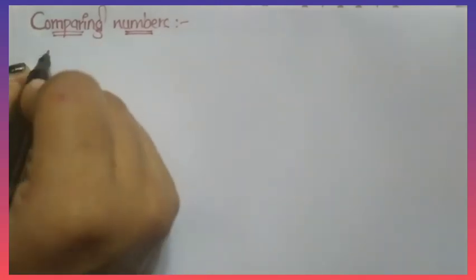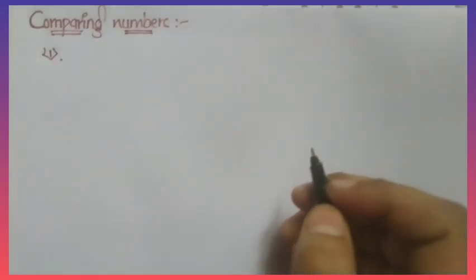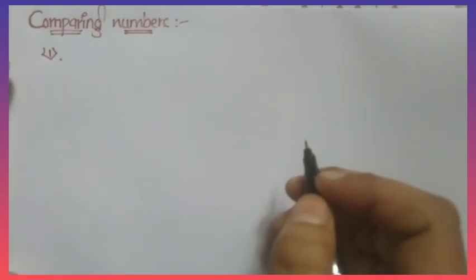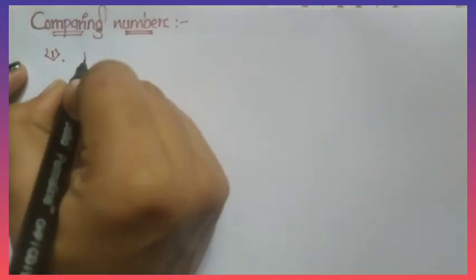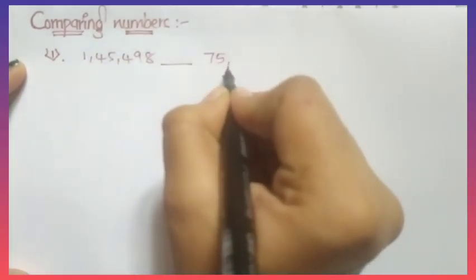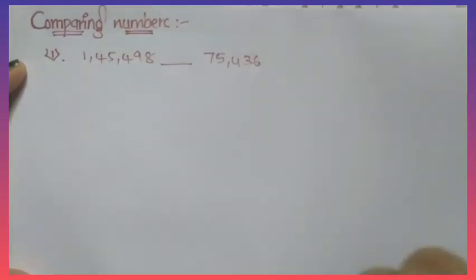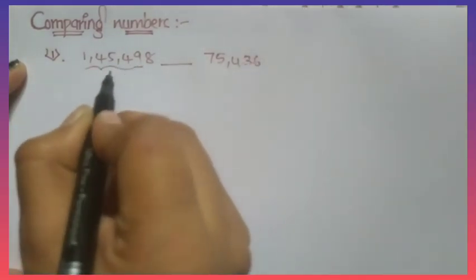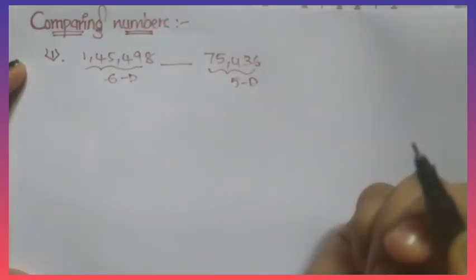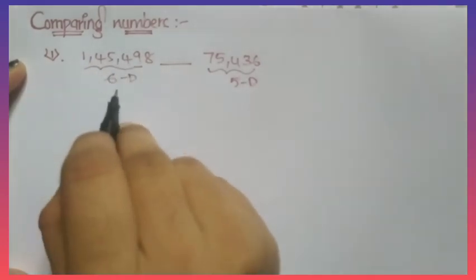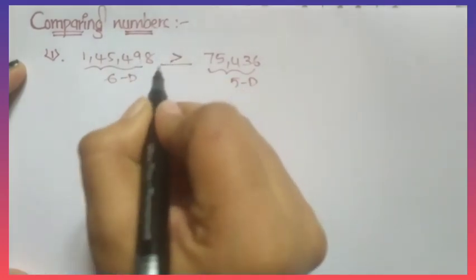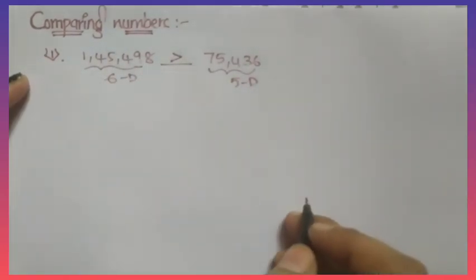First rule: the number with more digits is always greater. For example, 1,45,498 and 75,436. This number has 6 digits and this number has only 5 digits. The number with more digits is always greater, so the 6-digit number is greater than the 5-digit number. This is the first rule.